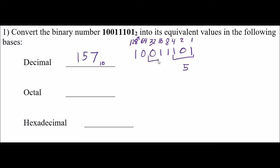I'll get the next group of 3 — you always group them from right to left. Again, I consider this the 1s place, the 2s place, the 4s place. Each group of 3 I have to consider as its own 1s, 2s, 4s place. So 2 plus 1 is a 3. And now my next group of 3 — there's a leading 0 here. That's the 1s place, 2s place, 4s place, where I have nothing in the 4, so this is a 2. My octal number is 235. That's my base 8 number.